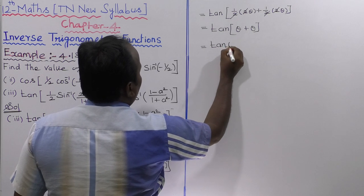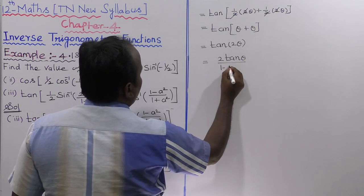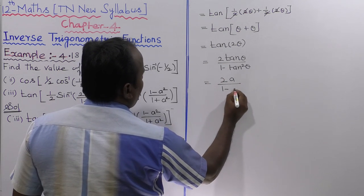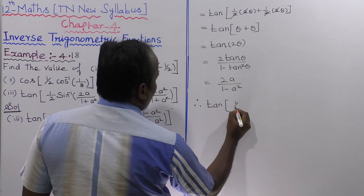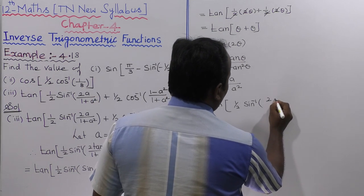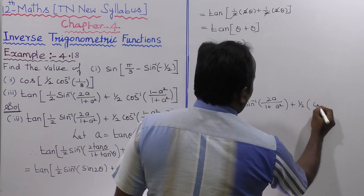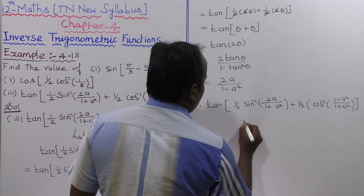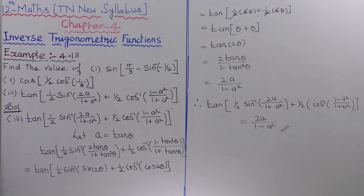So that is equal to tan half of 2 theta. Using the tan 2 theta formula: 2 tan theta whole divided by 1 minus tan square theta. Replacing tan theta by a, we get 2a whole divided by 1 minus a square. Therefore, tan half into 1 by 2 sin inverse of 2a divided by 1 plus a square plus 1 by 2 into cos inverse of 1 minus a square whole divided by 1 plus a square is equal to 2a whole divided by 1 minus a square. That is how the third subdivision is completed.